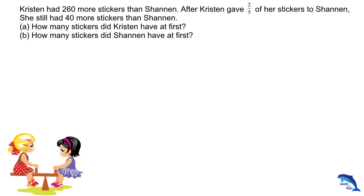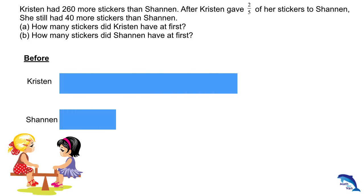As you can see in this question, the differences for both at first and in the end are given. So when that happens, it will be easier to solve this kind of question with the use of model drawing. I'll start off with their 'at first' state, with Kristen having 260 more stickers than Shannon.